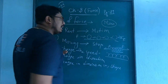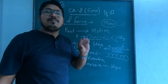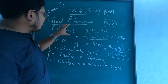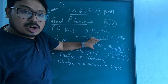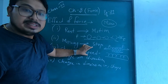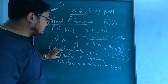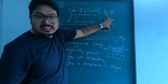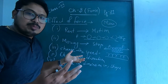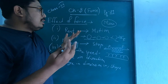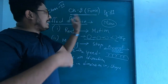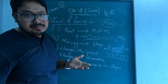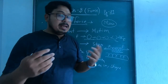One important thing we cannot change by applying force is the mass of an object. The mass will always remain the same. We can change rest to motion, motion to rest, speed, direction, and dimension — but the mass of an object cannot be changed. For example, if you measure a football's mass before and after playing, the mass will always be the same.